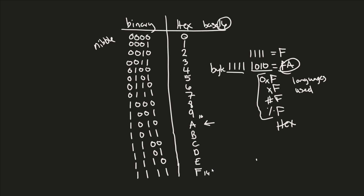Let's say we have 0x27. What is that equivalent to in binary? We look up two, which is 0010, and we look up seven, which is 0111. So 0x27 in binary is 0010 0111. You're getting pretty good at this translation now.